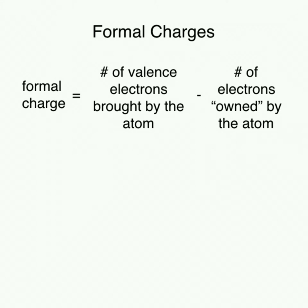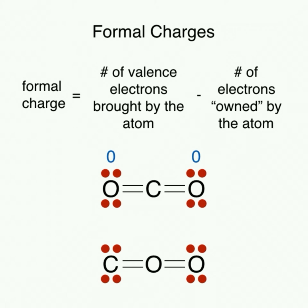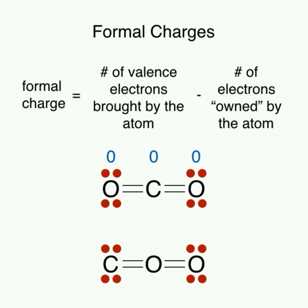Let's look at our two isomeric structures of CO2. In our first isomer, both oxygens have formal charges of zero, as they both brought six valence electrons and now both own six electrons in the compound. Similarly, carbon also has a formal charge of zero, as it brought four valence electrons and now owns four electrons in the compound.